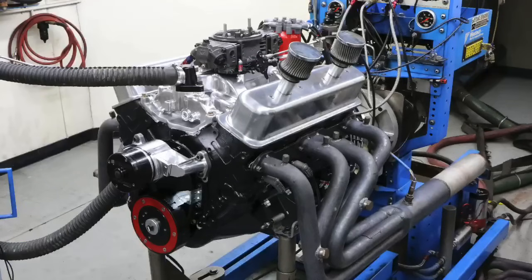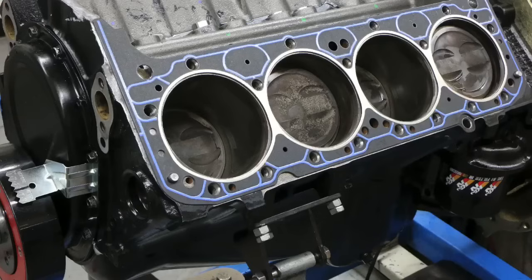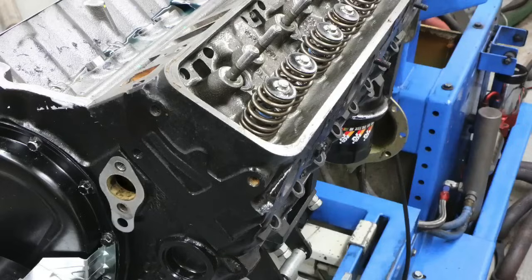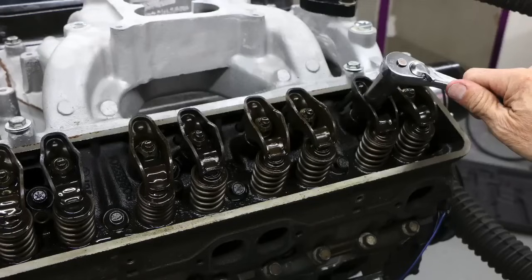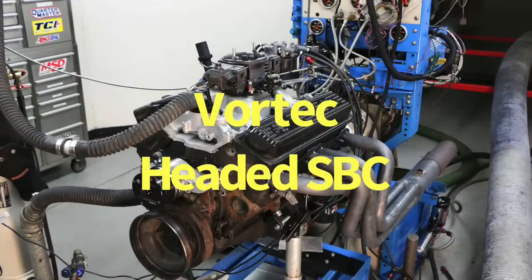a bare bones low compression hydraulic flat tappet 350 Chevy equipped with Vortec cylinder heads and went from 278 horsepower all the way up to 418 horsepower, all while retaining the Vortec heads. The question for today is how did